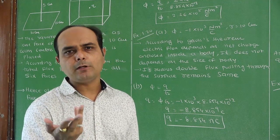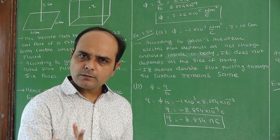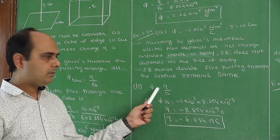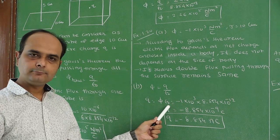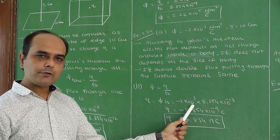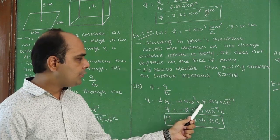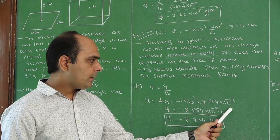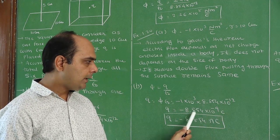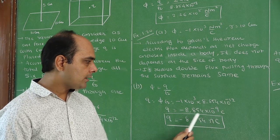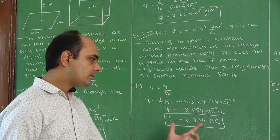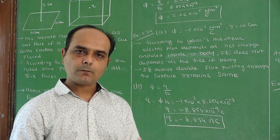Now for the second question: calculate the charge. Using Gauss theorem, flux Φ = q by epsilon 0. Making charge q the subject: q = Φ times epsilon 0. The value of Φ is minus 1 into 10 to the 3; epsilon 0 is 8.854 into 10 to the minus 12. By calculating — 3 minus 12 gives minus 9 — so q is minus 8.854 into 10 to the minus 9, which is minus 8.854 nanocoulombs. This is the charge enclosed by the surface.